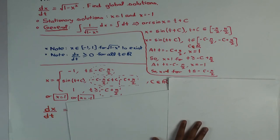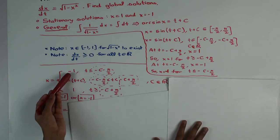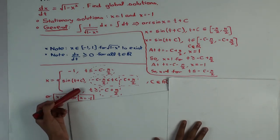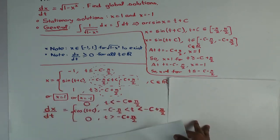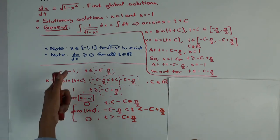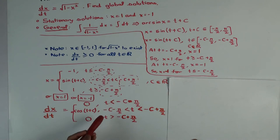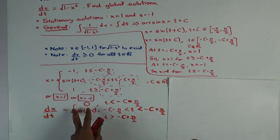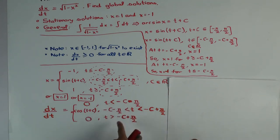Let's do it in this case. For dx/dt on each interval: the derivative of -1 is 0; the derivative of sin(t + c) is cos(t + c); and the derivative of 1 is 0, since those two are constant functions. Right now we just have dx/dt on the open intervals — we cannot say anything about the boundary points yet; we have to check those separately.